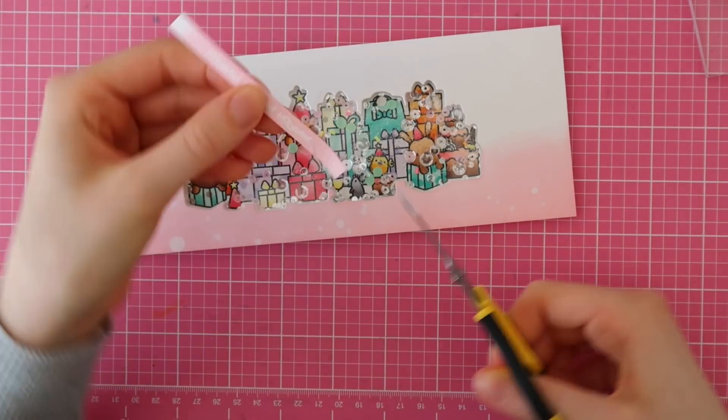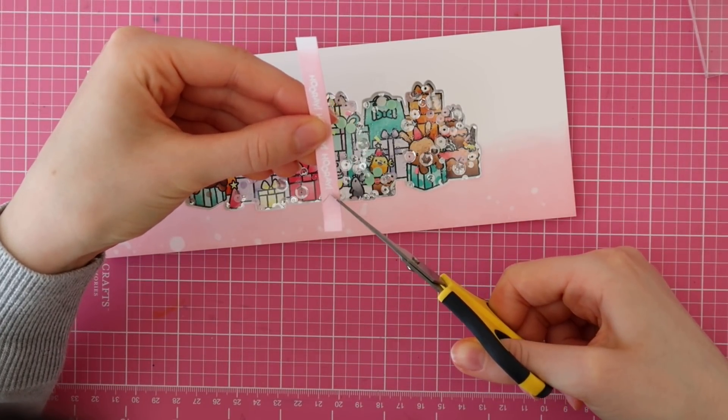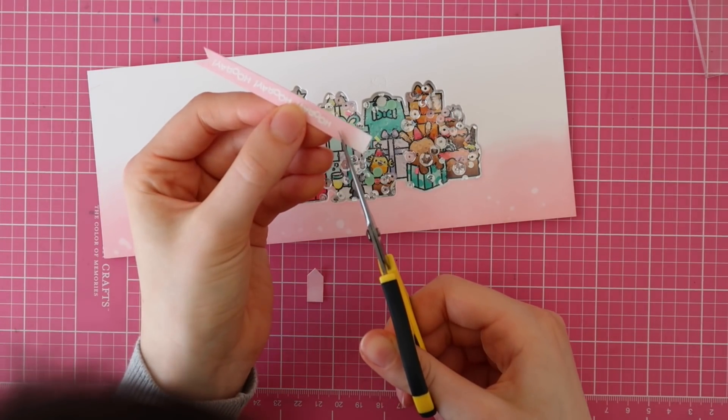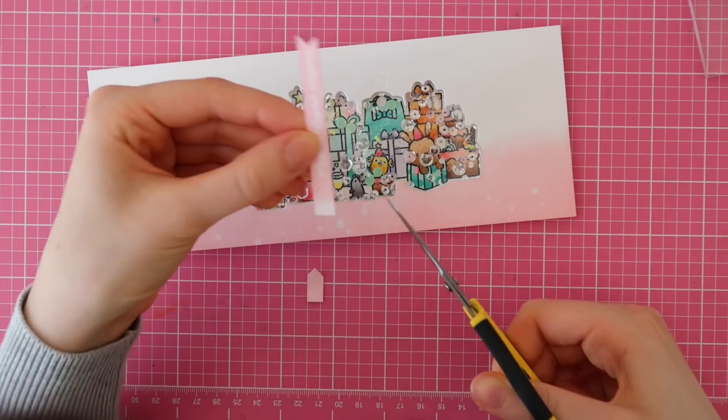And then I adhered it to the card and I didn't like it because I wanted my sentiment banner to match perfectly with the pink ink on this card. So I heat embossed it and then I just used the Spun Sugar distress oxide ink to add some color. And now everything matches perfectly together.